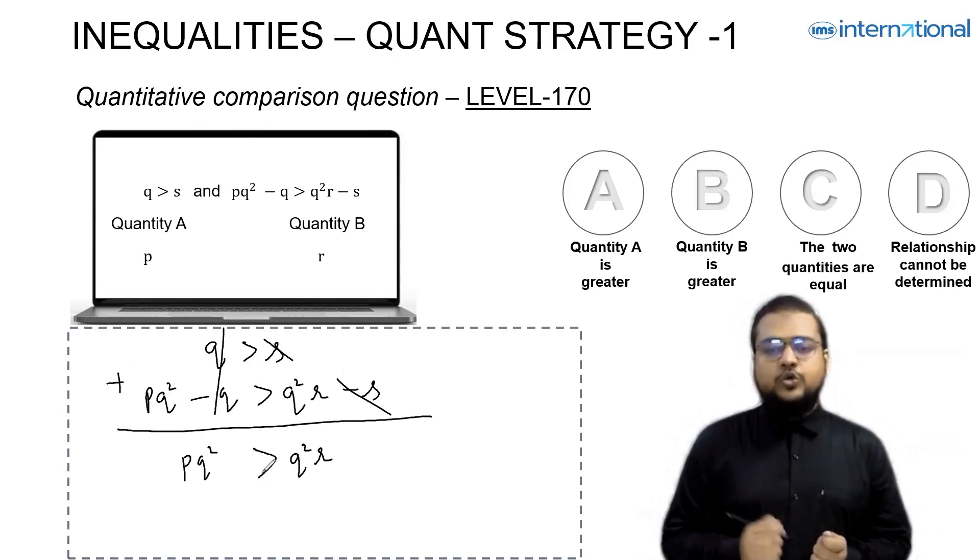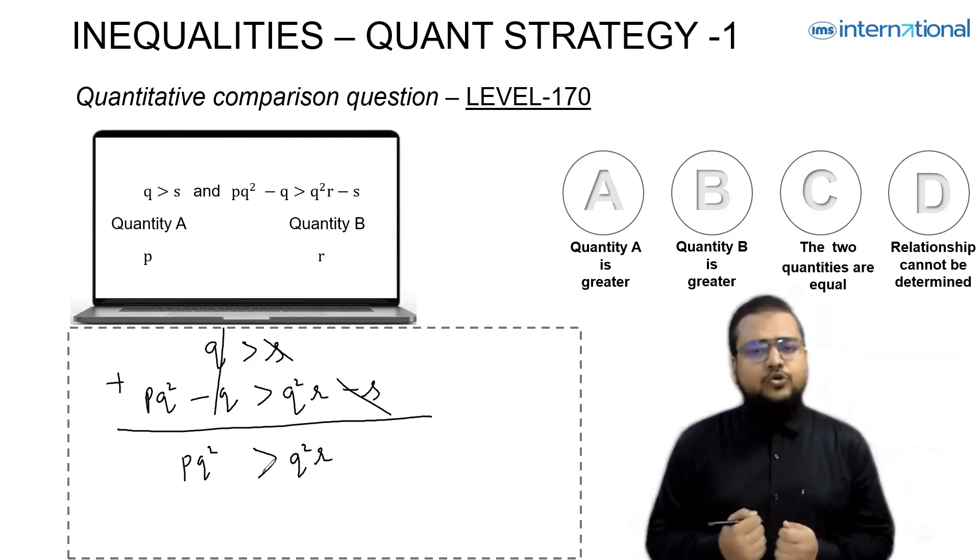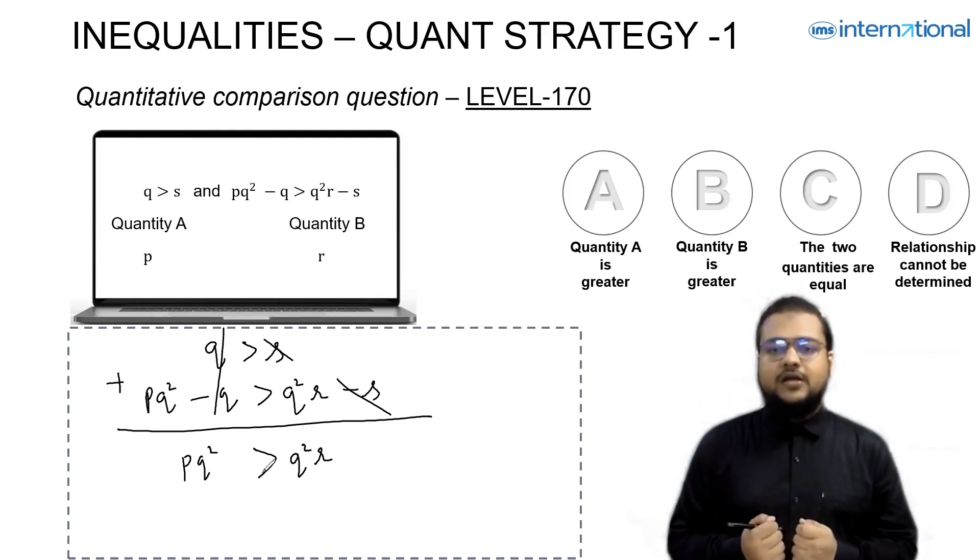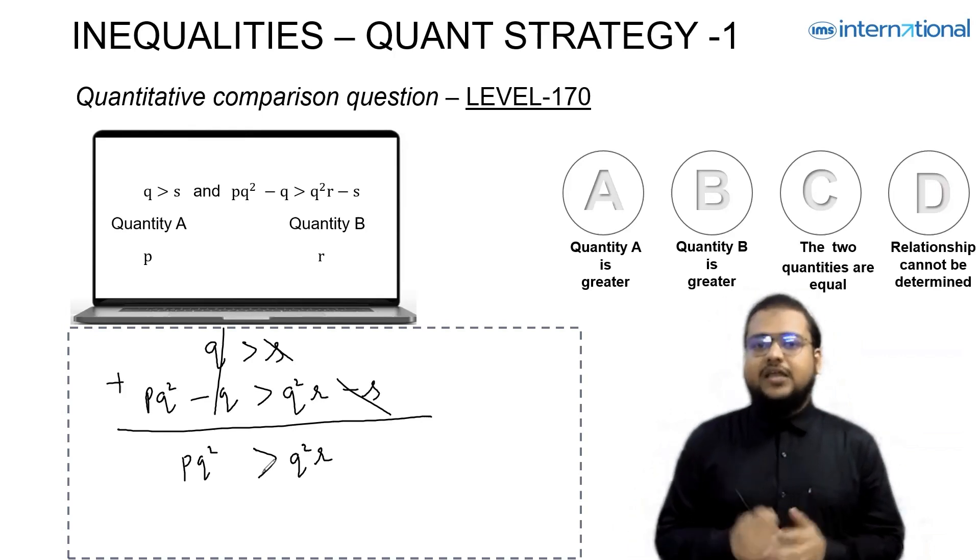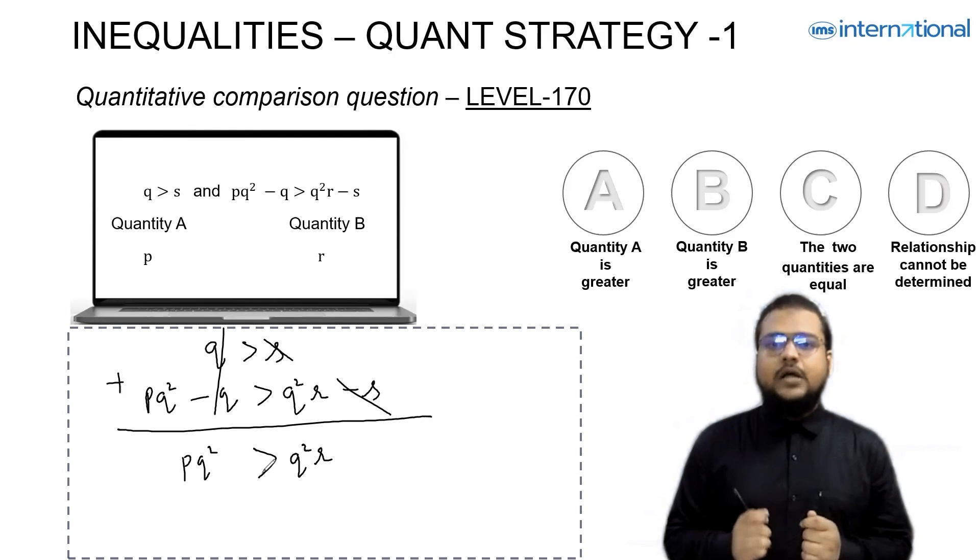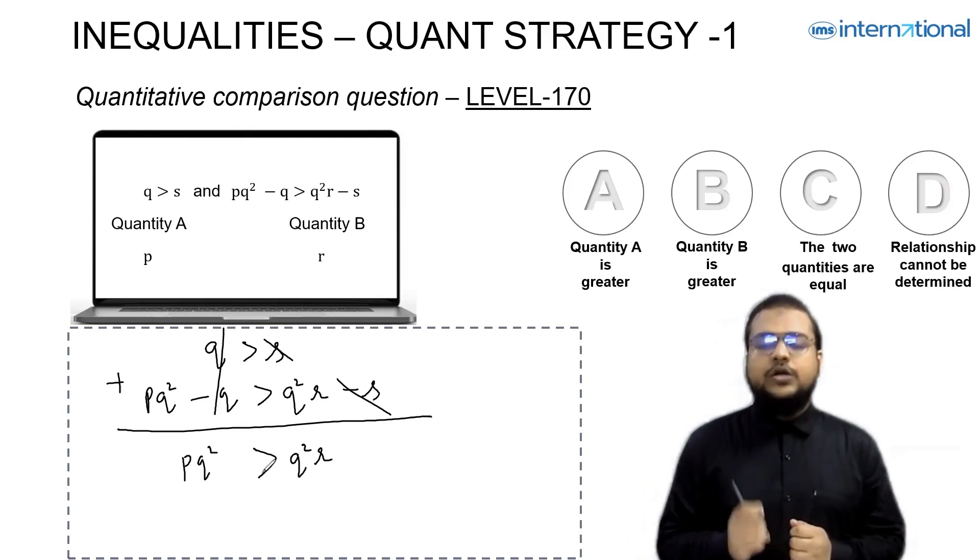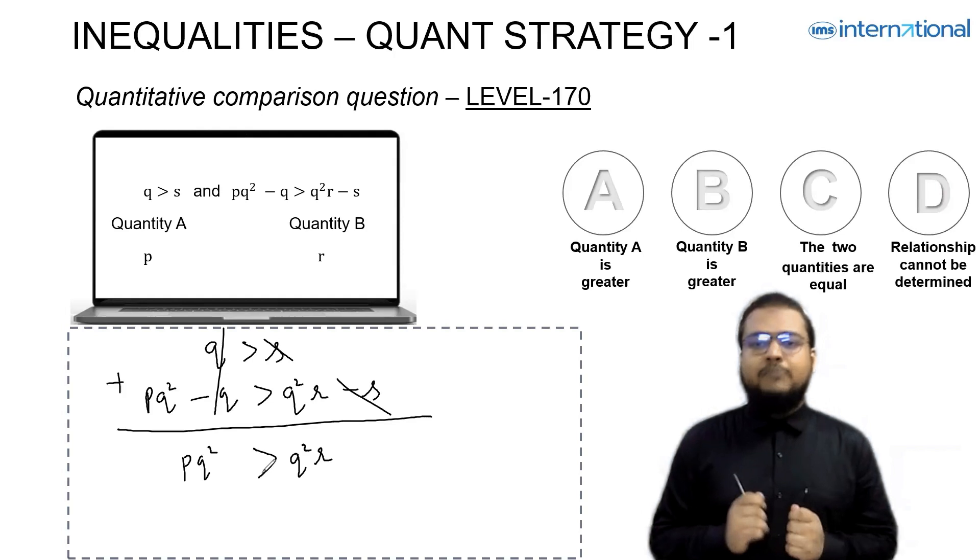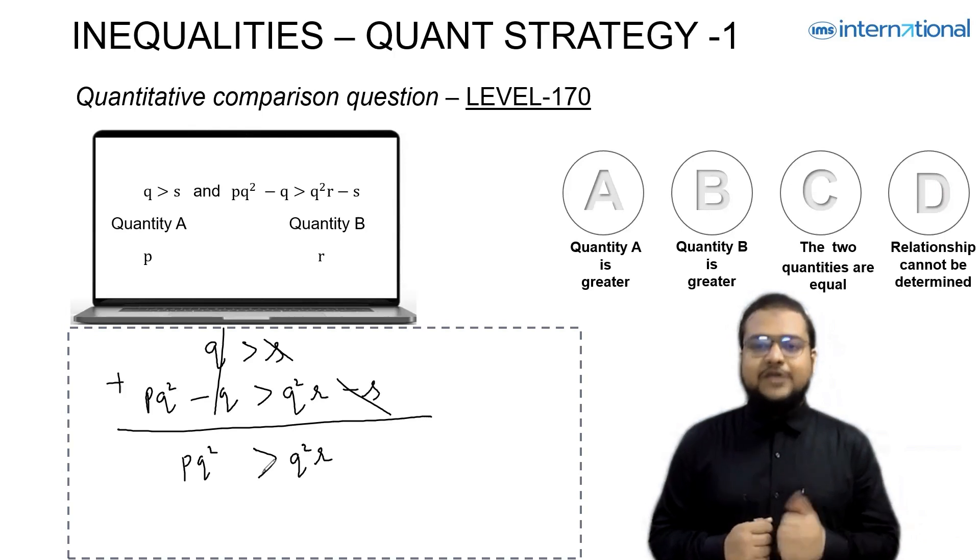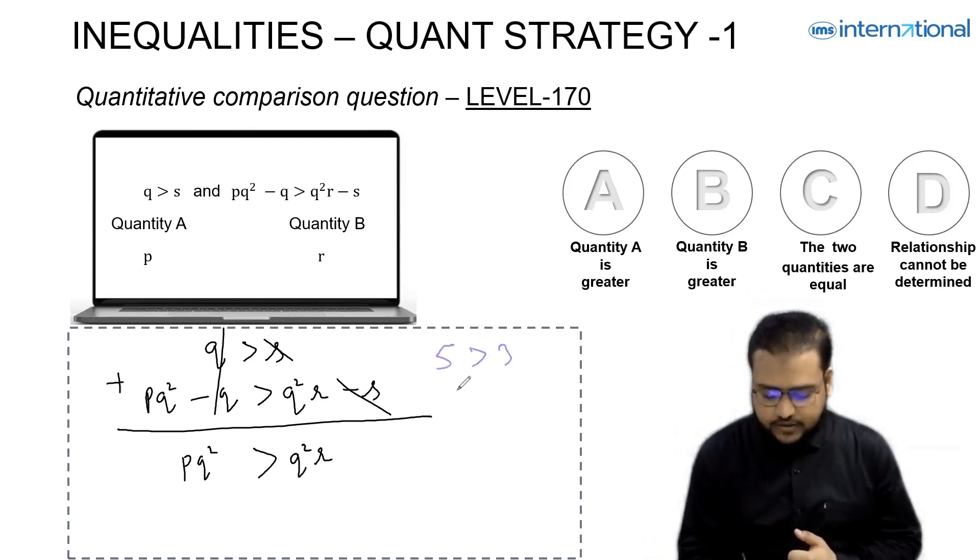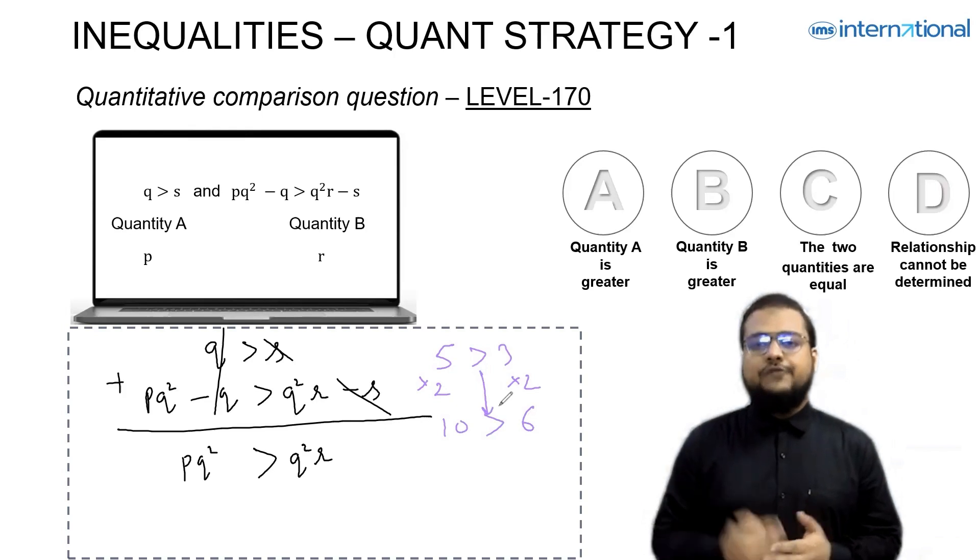Now tell me, I have Q² on both sides of the inequality. Can I divide both sides by Q²? And if I do so, what sign should I have to keep? Can I keep the same sign or do I have to invert? Let me answer that. Remember in an inequality, if you multiply or divide by a positive number, then you are allowed to keep the sign the same. But if you are multiplying or dividing the inequality with a negative number, then you have to invert the sign.